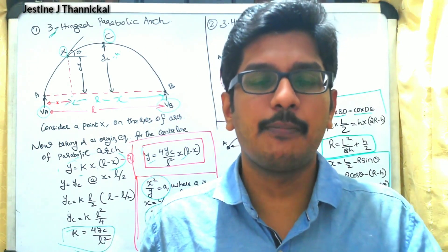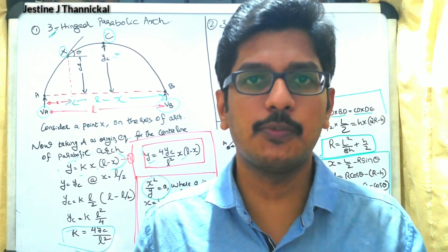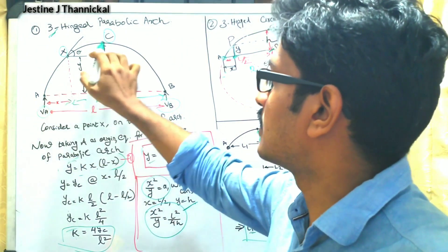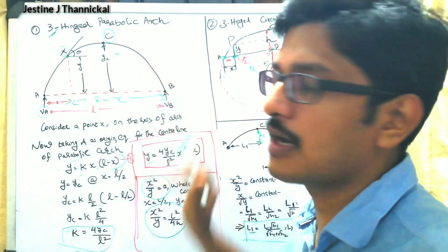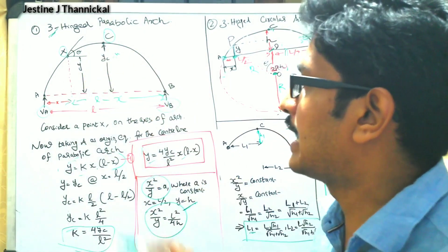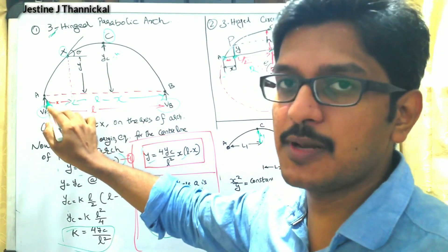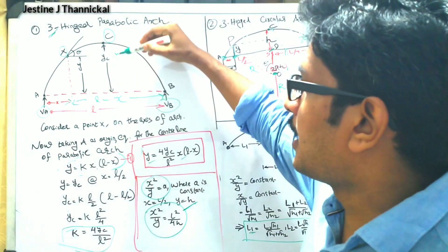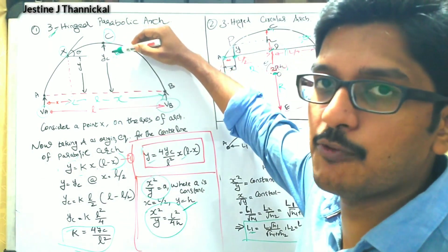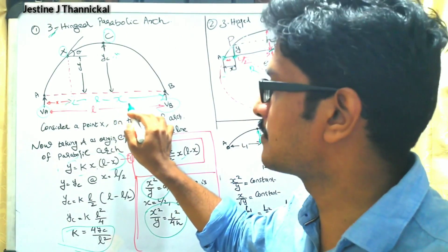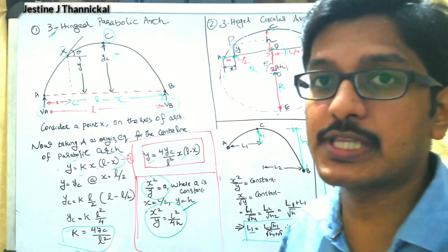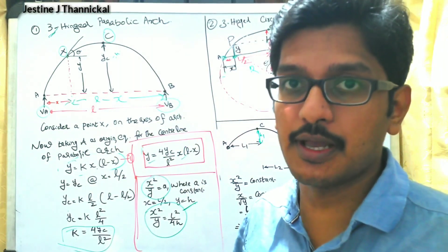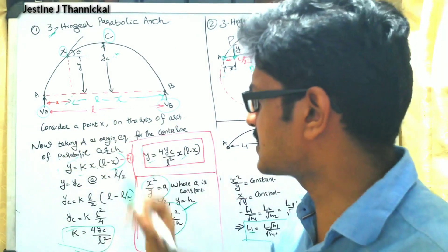We can classify three-hinged arches as parabolic and circular. First, we will consider the parabolic arch. The given arch has three hinges at points A, C, and B. We will consider one point X, where the horizontal distance from A is x and the vertical distance is y. The vertical distance to the crown point is yc, and the horizontal distance from both ends to the crown is l/2. Points A and B are called the abutments, which hold the loads acting on the arch, and the line connecting them is called the springing line.